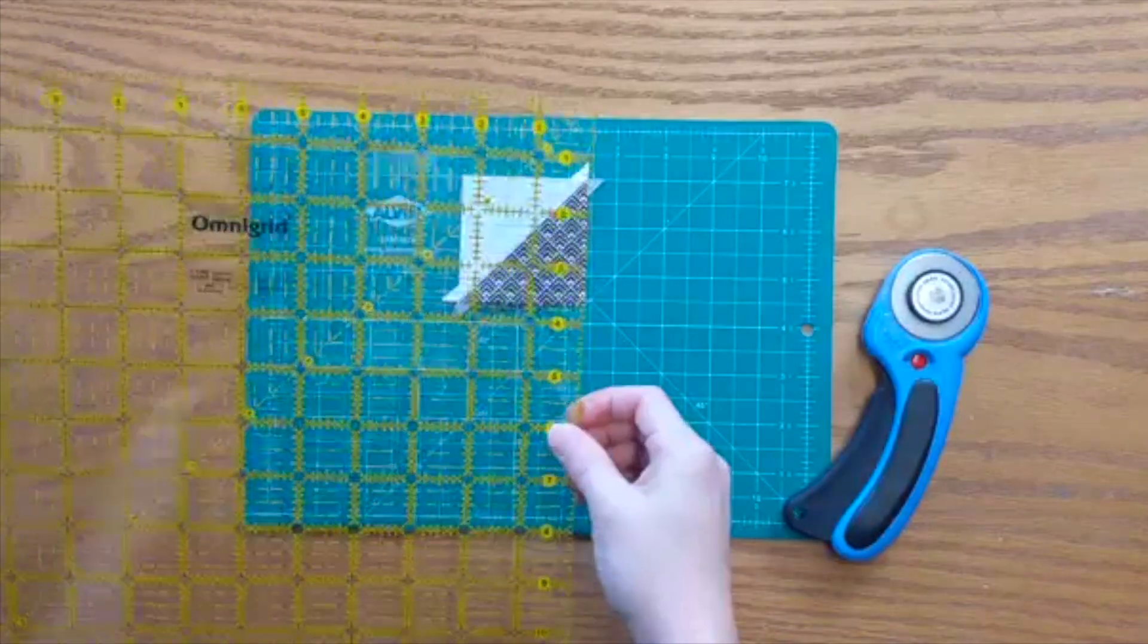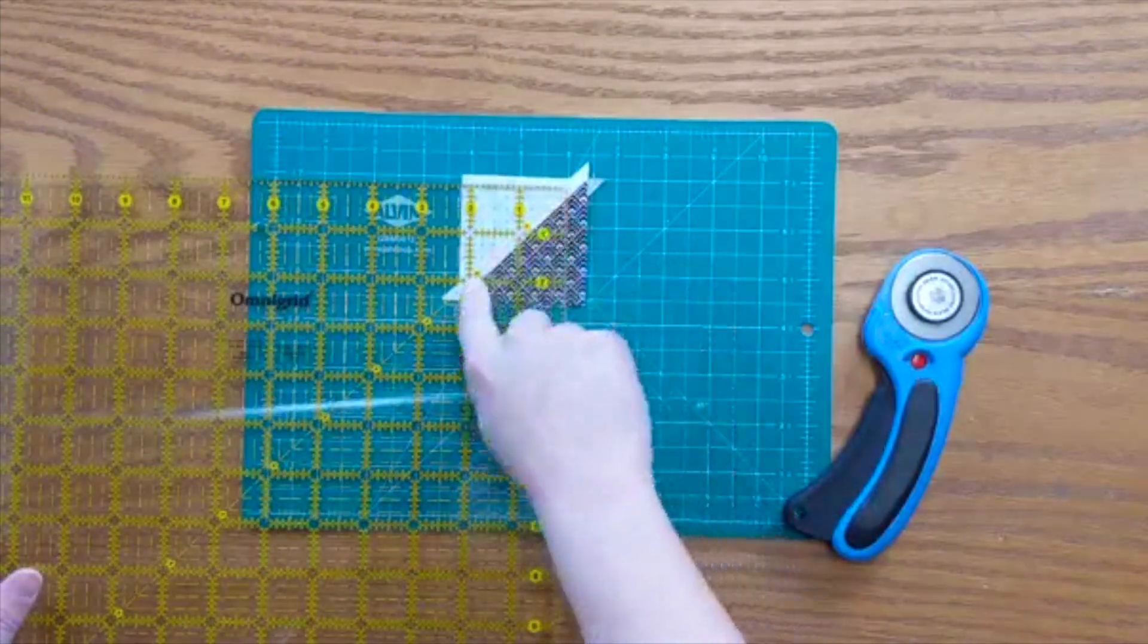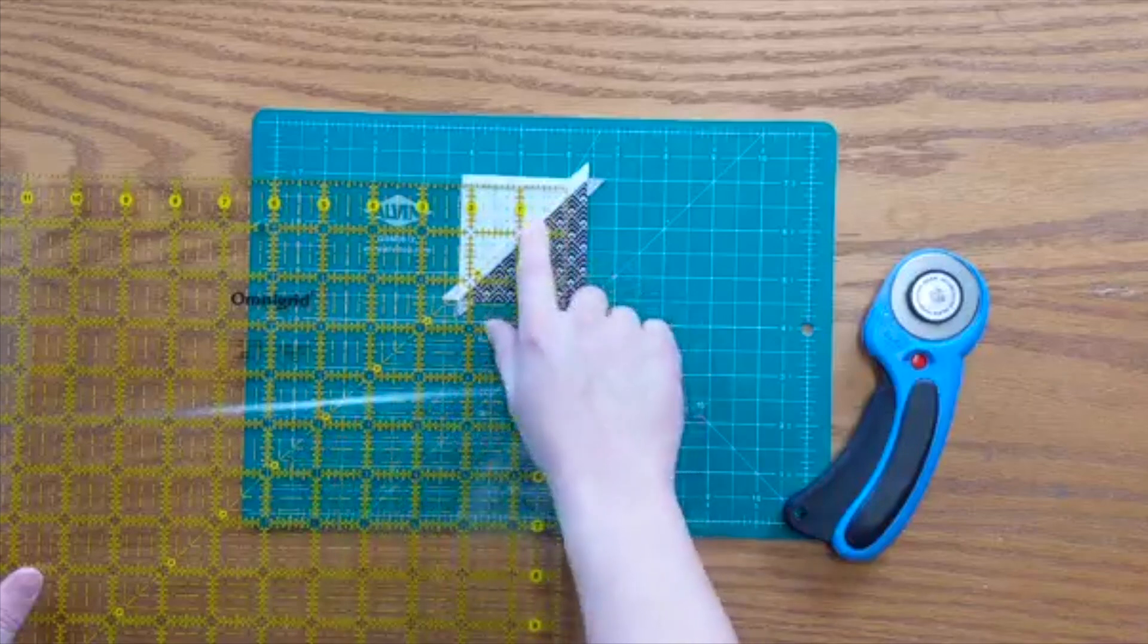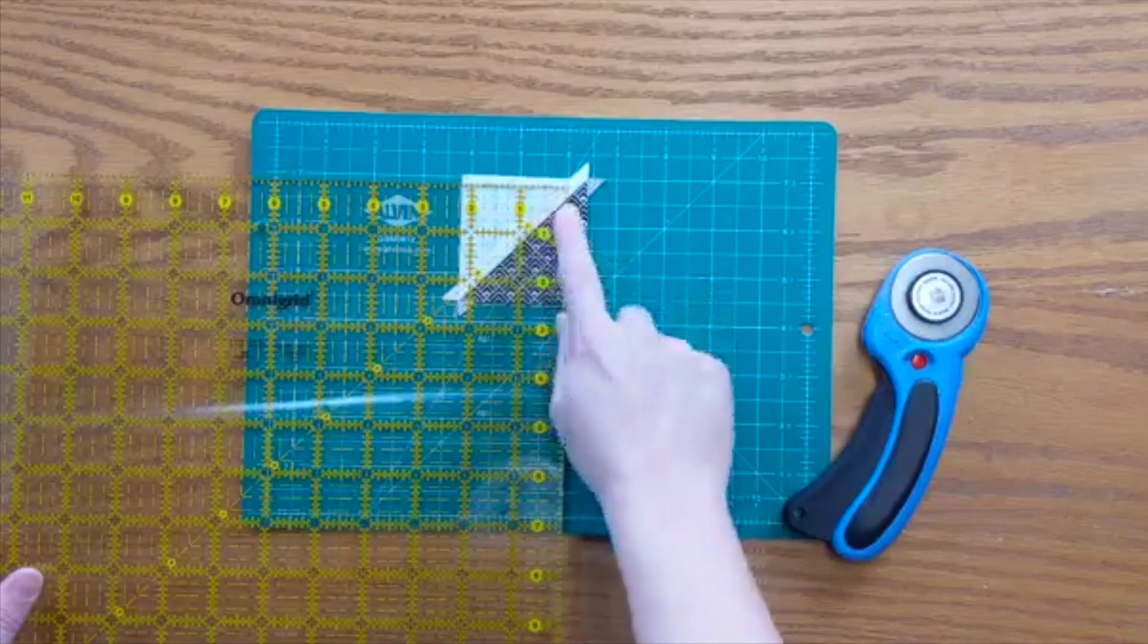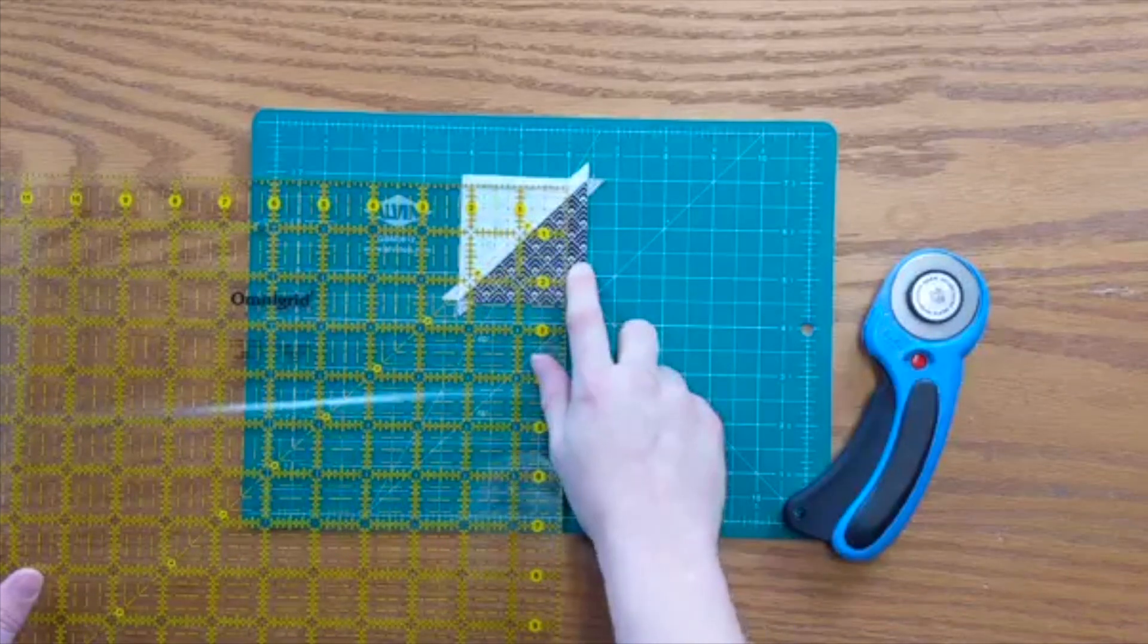The reason why is because on your square ruler, you'll notice that there is a diagonal line going across. I want to line up my diagonal line on my ruler with the diagonal line of my half square triangle.